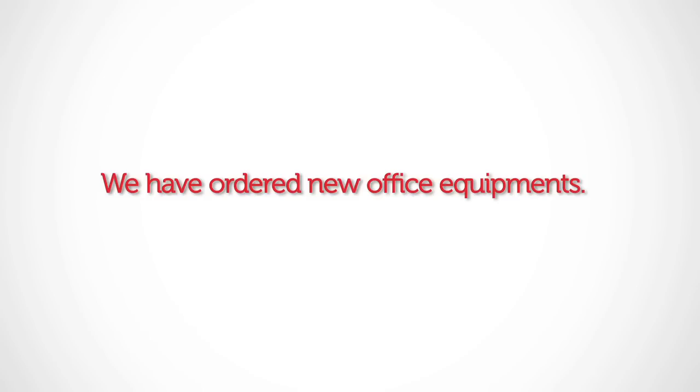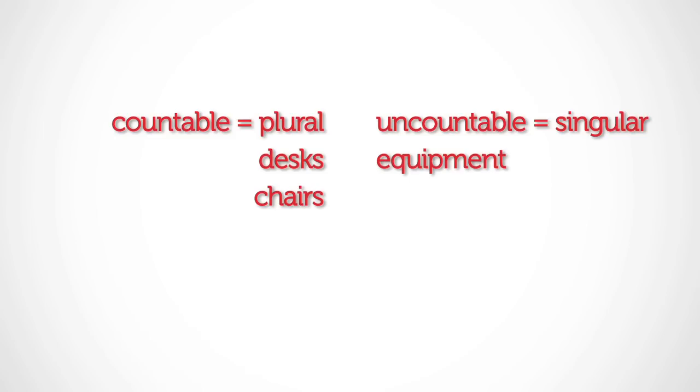Correct — we have ordered new office equipment. Why? This is because equipment is a noun which expresses an idea of many different things in an office. If you split up the idea into separate items like desks and chairs, then these words are of course countable.